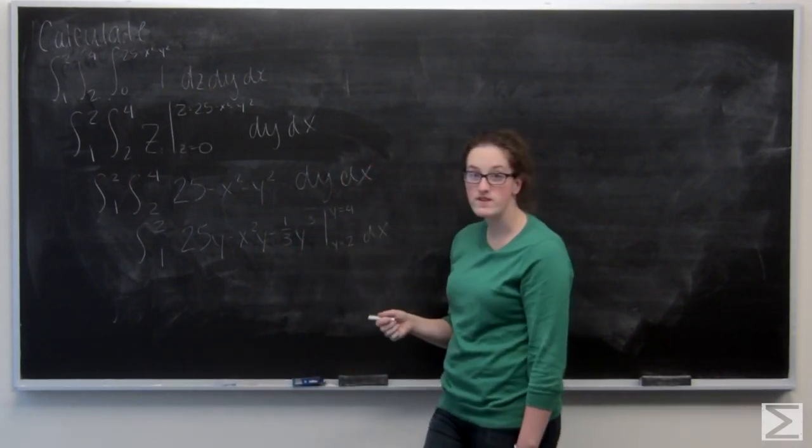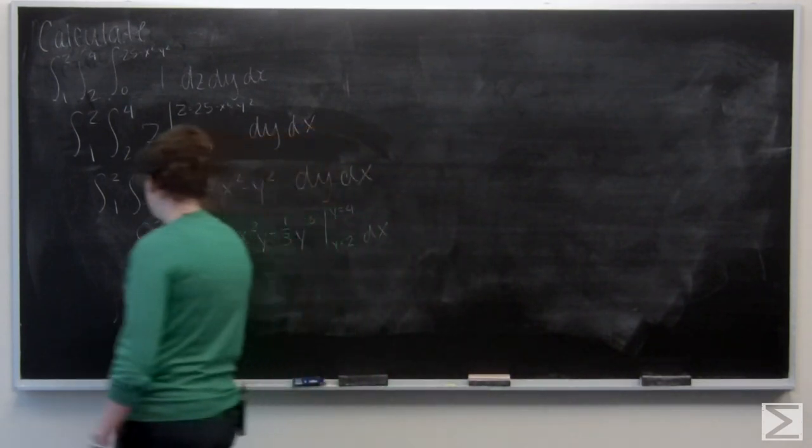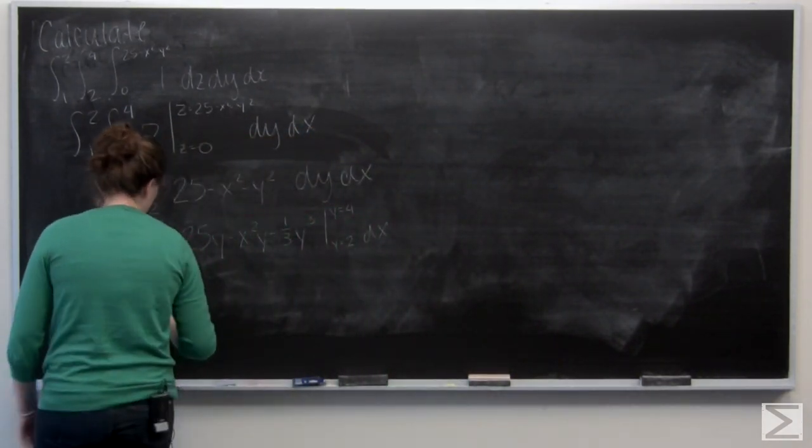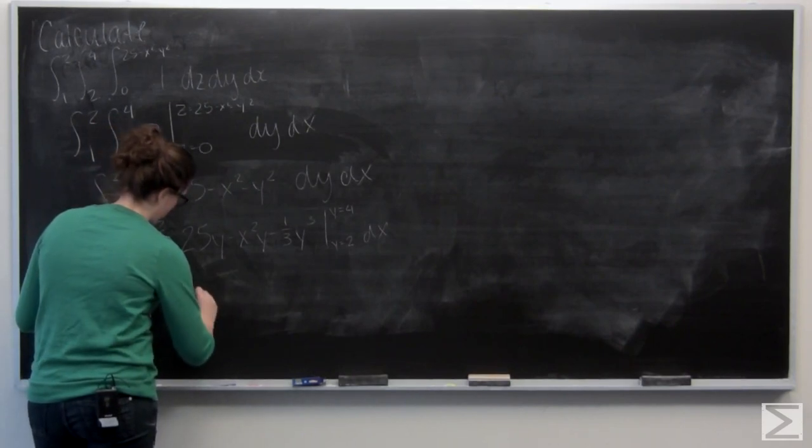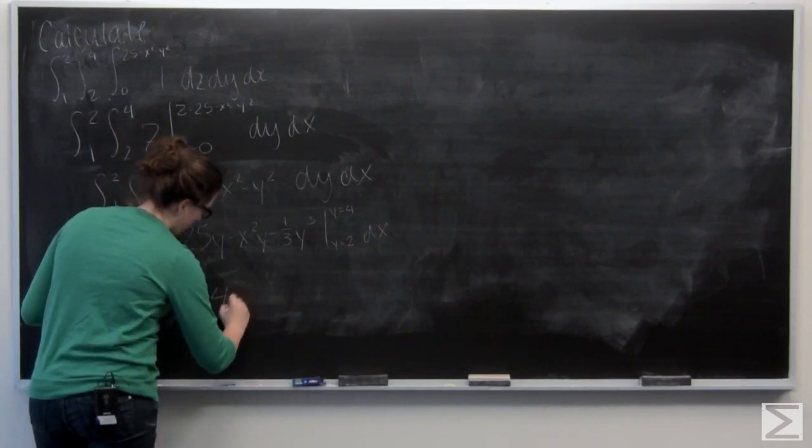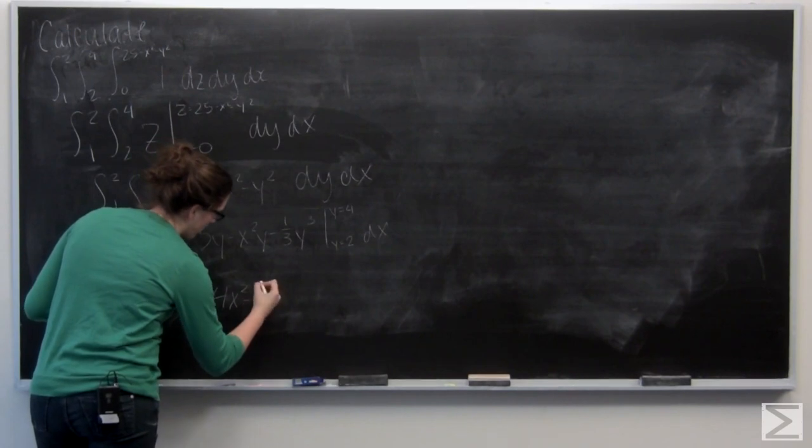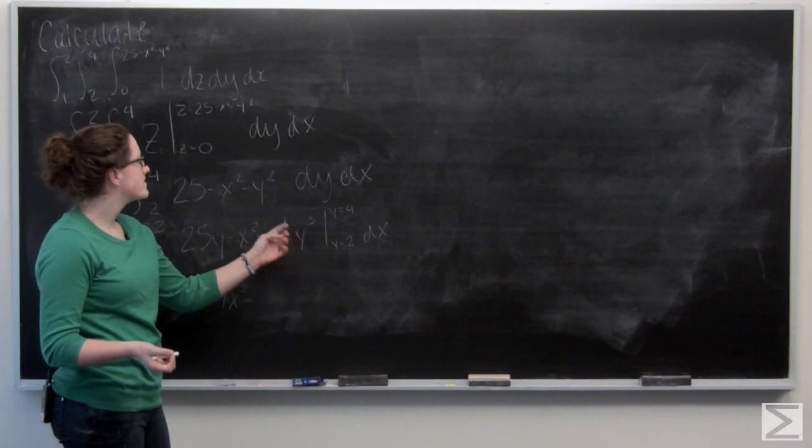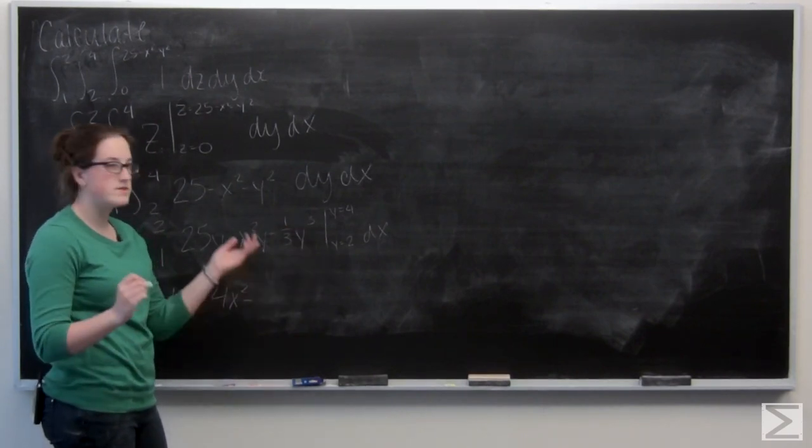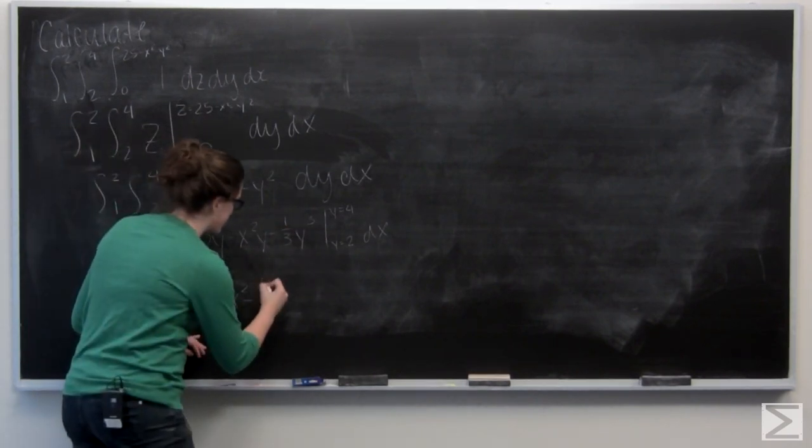First we're going to plug in 4 for y. 4 times 25 is 100. Minus 4x squared minus 1 third times 4 to the third is 64, so 64 thirds.